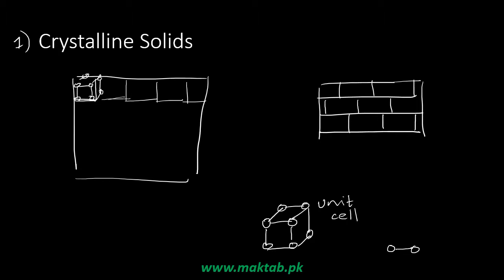We call them crystalline solids because they are in the shape of crystals. Examples are sugar and other crystalline materials. The repeating unit cell pattern builds the whole solid structure.